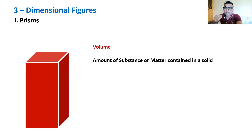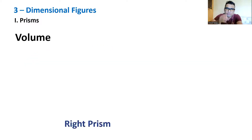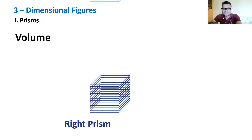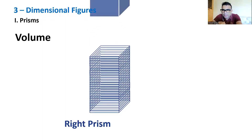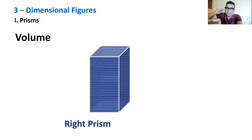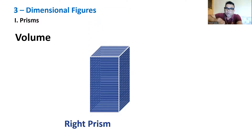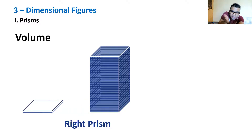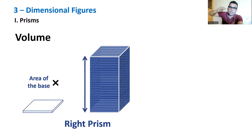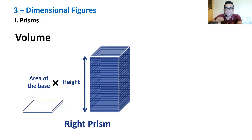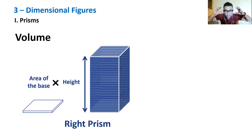The amount of substance or matter contained in a solid is exactly its volume. To find it: whatever area of the base exists, that same area is stacked one above the other until the entire height is occupied. So volume = area of the base × height. This applies to all prism-based figures — cube, cuboid, and cylinder.